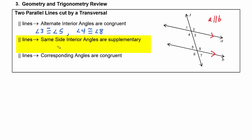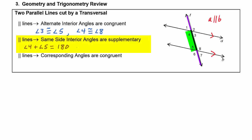When the lines are parallel, the same side interior angles are supplementary. Same side refers to being on the same side of the transversal, and interior means inside the two parallel lines. So same side interior angles would be angle four and five — angle four plus angle five equals 180 degrees. It is also true that angle three and angle eight would add up to 180 degrees.